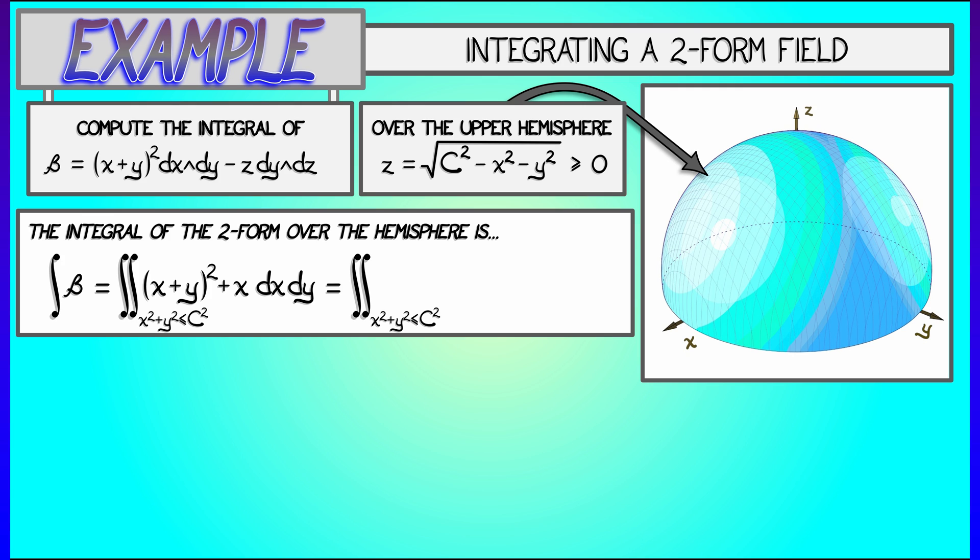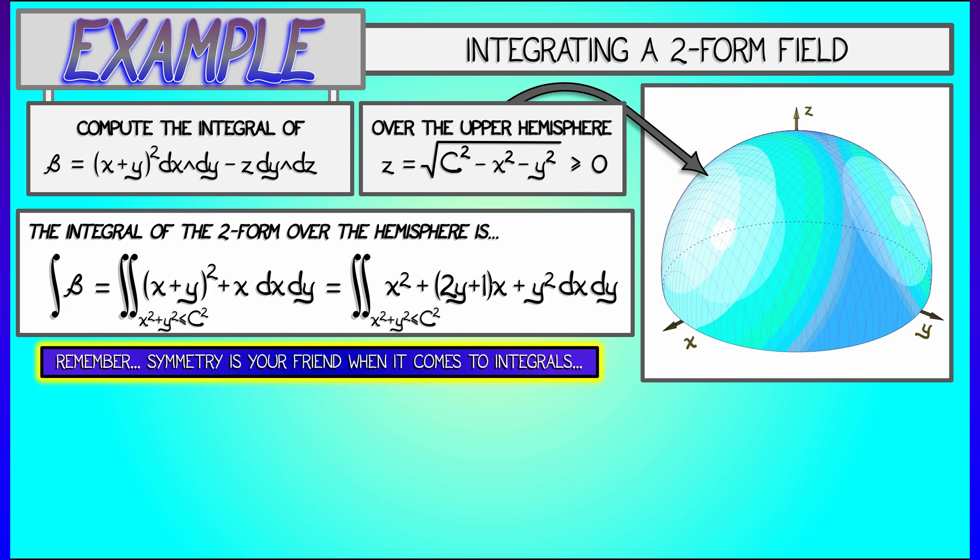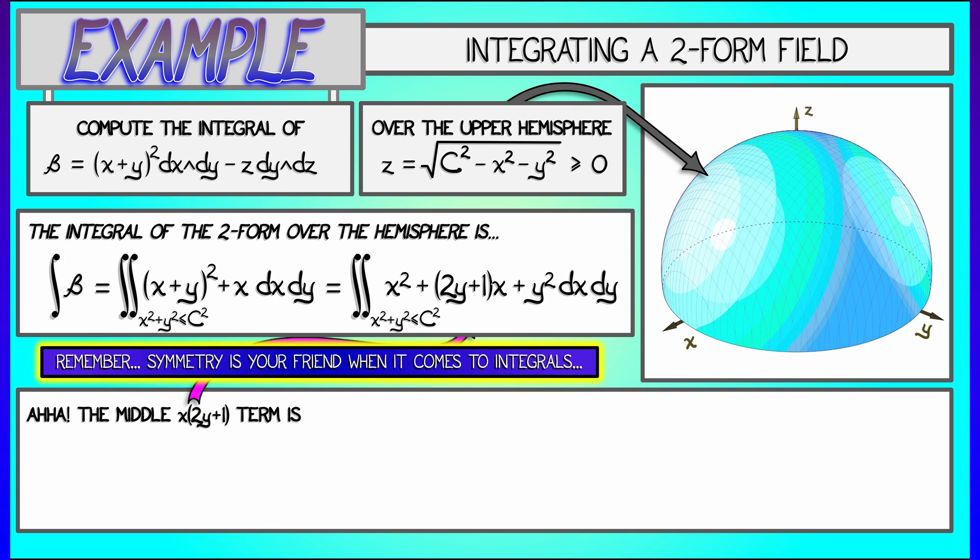Expanding out that quadratic, we get x squared plus quantity 2y plus 1 times x plus y squared. Now, this is a non-trivial double integral, so let's think. I see that middle term, that 2y plus 1 times x. That is odd in x, and we're integrating over a symmetric domain in the xy-plane. That means that middle term in the double integral is zero, and so I'm going to get rid of that.